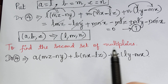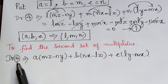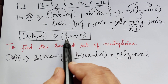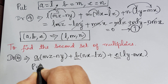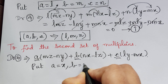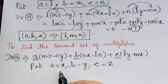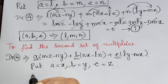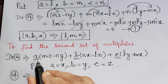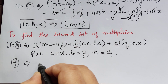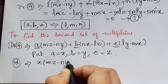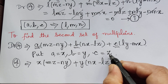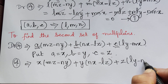To find the second set of multipliers, I take the denominator of the fourth ratio and find values of a, b, c — different from l, m, n — that make it 0. I choose a equal to x, b equal to y and c equal to z. Substituting into the denominator: x(mz minus ny) plus y(nx minus lz) plus z(ly minus mx).